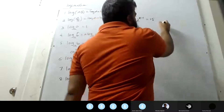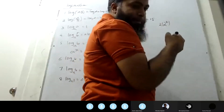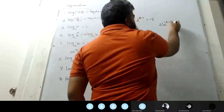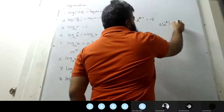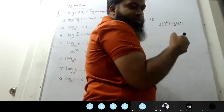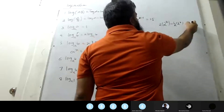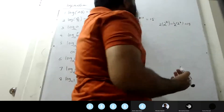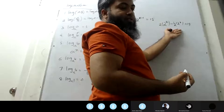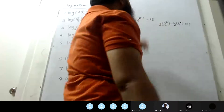2 into 2 to the power x, minus half into 2 to the power x, equals 15.